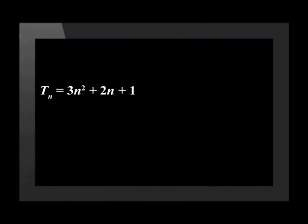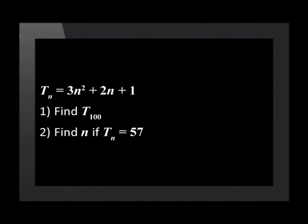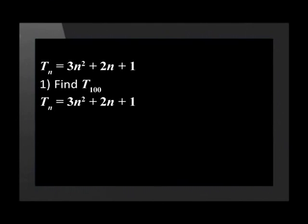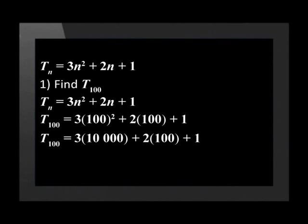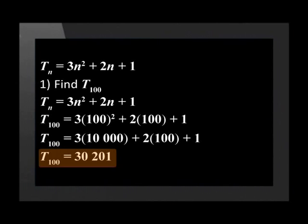Next we look at an example where we are given the general term of a quadratic sequence and have to find the position of a term. Given the general term tn equals 3n squared plus 2n plus 1, first find the hundredth term. To find term 100, replace n with 100: 3 times 10,000 plus 2 times 100 plus 1 equals 30,201. The 100th term has a value of 30,201.